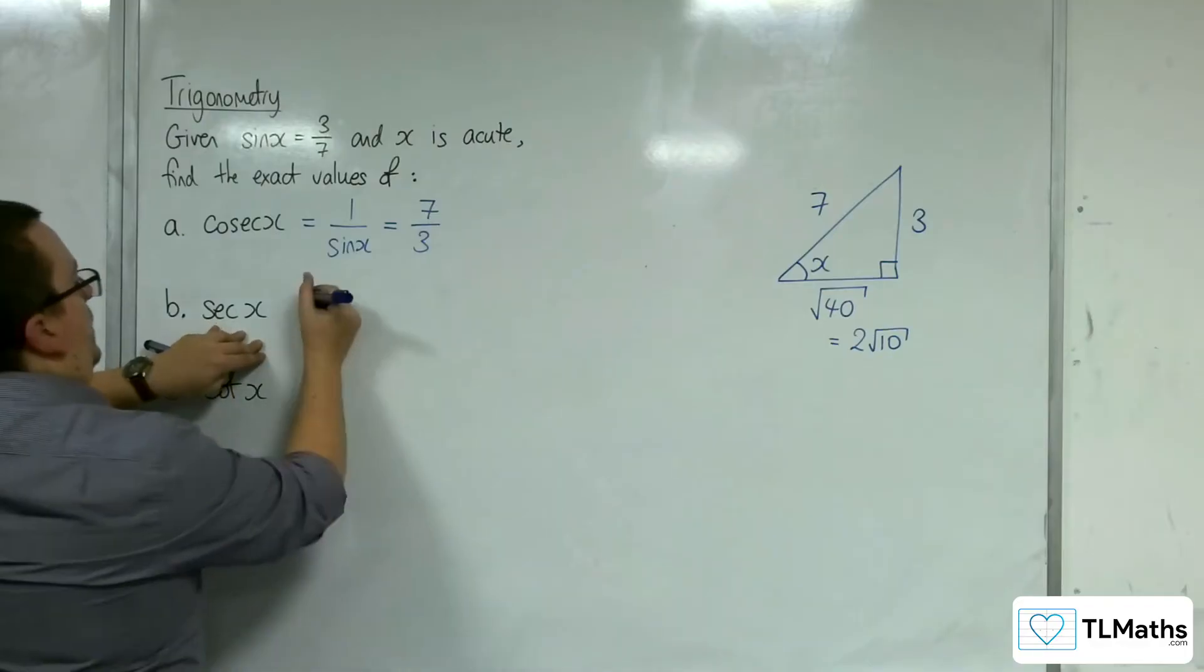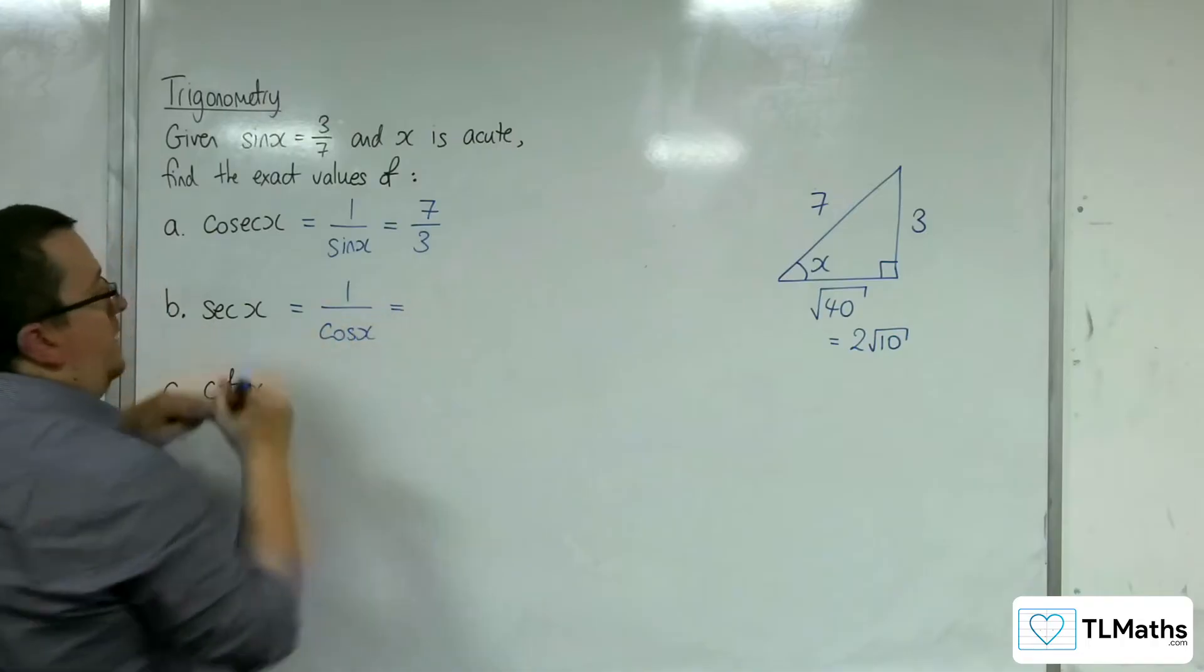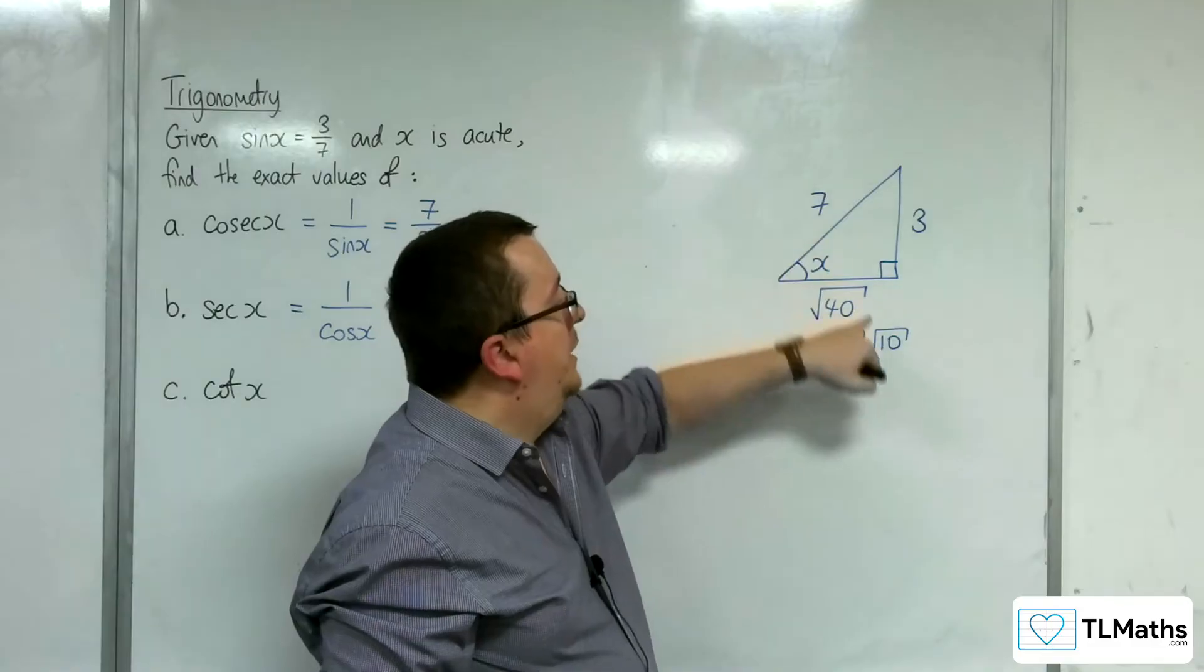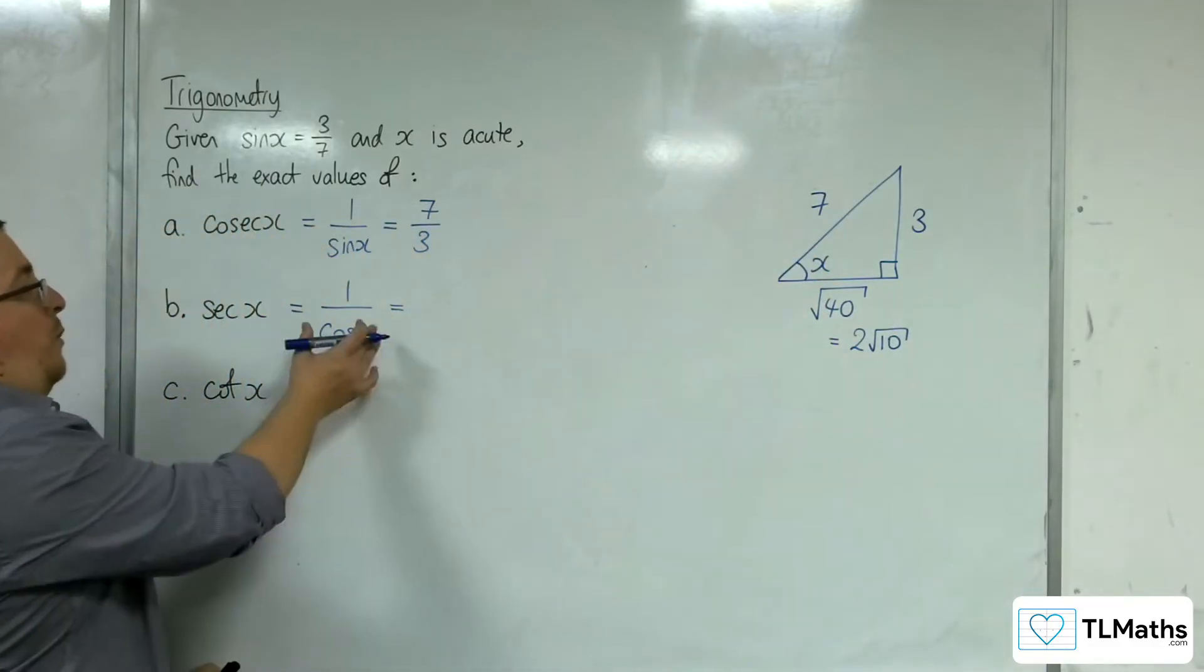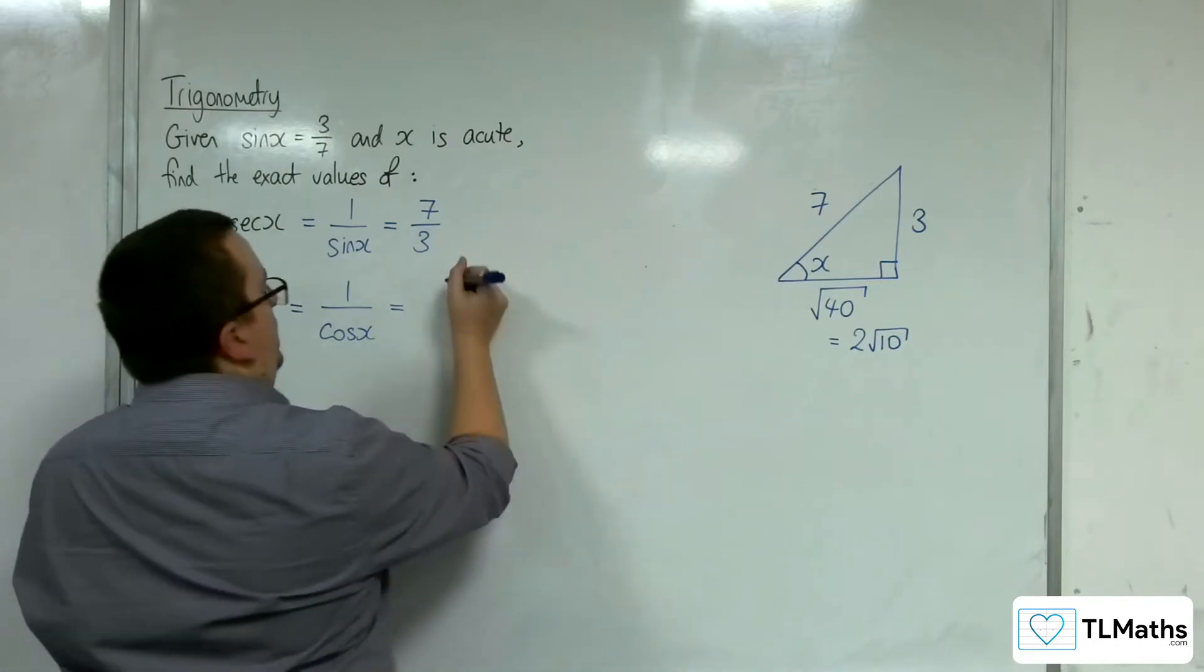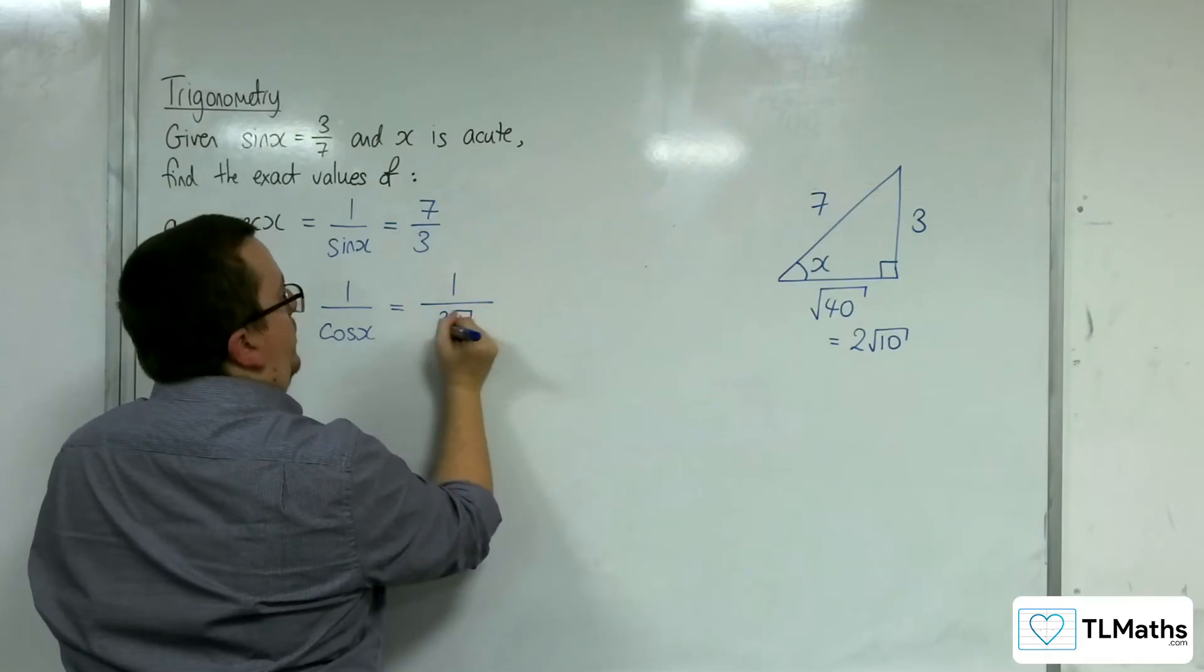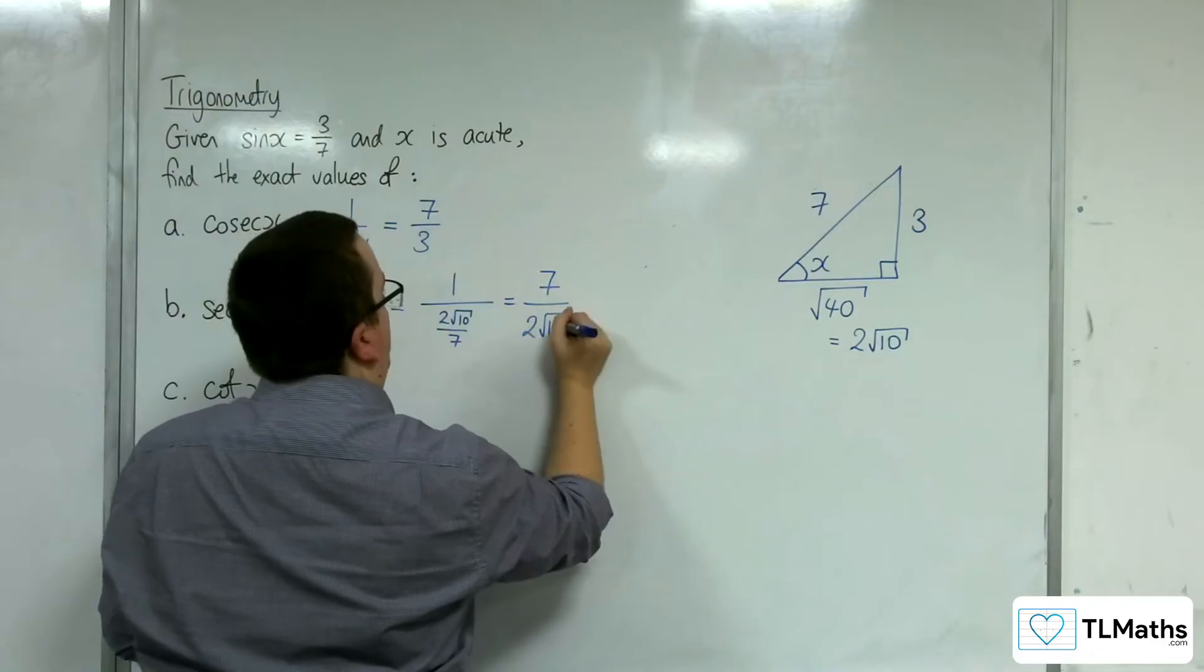Sec x is 1 over cos x. Cosine is adjacent over hypotenuse, so 2√10/7. Because we've got 1 over cos x, it's the reciprocal of that, which is 7/(2√10).